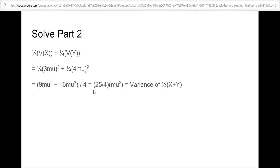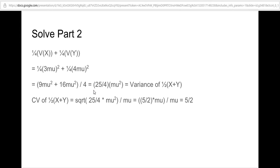Be careful — that result is still the variance. What we actually need is the standard deviation. So we take the square root of (25/4)mu², which gives (5/2)mu, and then divide by the mean mu to get the coefficient of variation. Our final answer is five-halves, because the mu's cancel out.